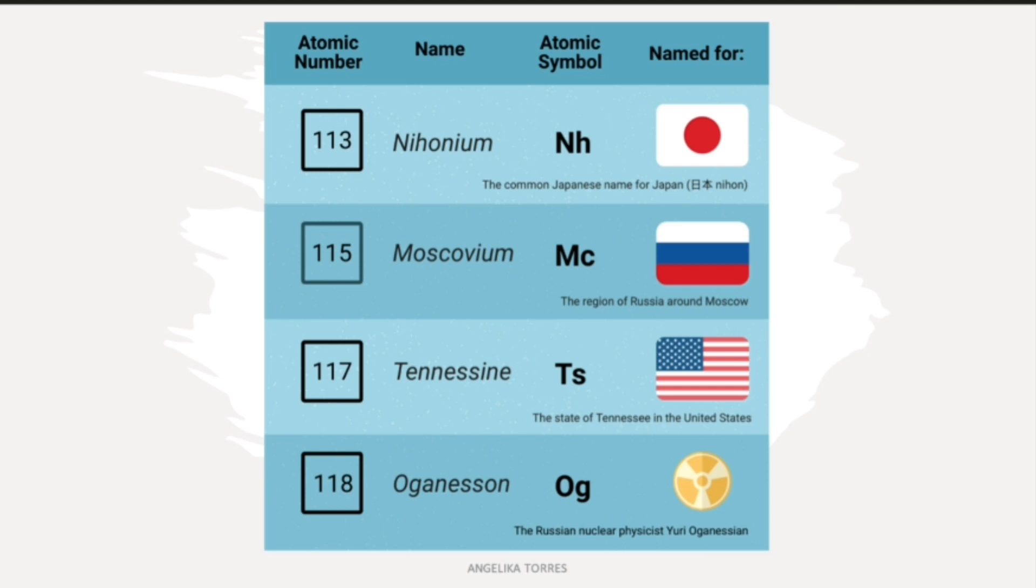Three of these elements were named after the places where they were discovered: Nihonium, Moscovium, and Tennessine. The fourth element is named Oganesson, and it was named after a Russian nuclear physicist named Yuri Oganessian.